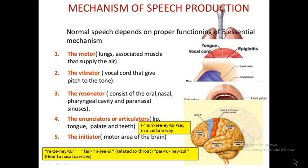One more thing about the mechanism of speech production: normal speech depends on proper functioning of five essential mechanism spots. These five spots come into picture to produce the sounds. The first spot is the motor. The second is the vibrator. The third is the resonator. The fourth is the enunciator or articulator. And the last one is the initiator.